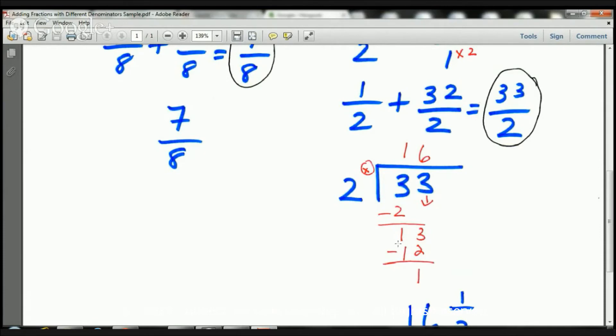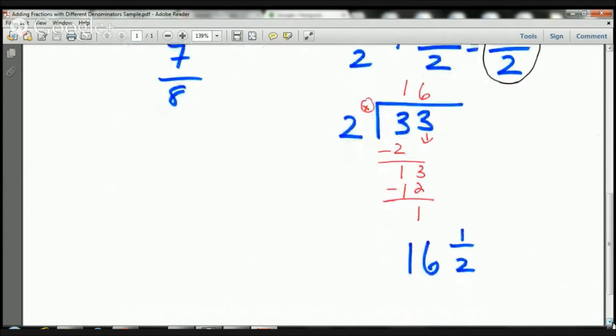This 3 here, I'm going to bring it down. So, now I have 13. How many times can 2 go into 13? Well, I know that 2 can go into 13 6 times. 2 times 6 is 12. The 12 will go there. I subtract, put my line there. 13 minus 12 is 1. So, take a look, boys and girls. That 16 right there, that's going to be your whole number. The remainder is going to be your numerator. And the divisor is going to be your denominator.